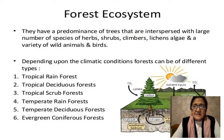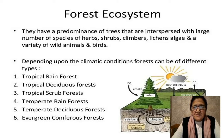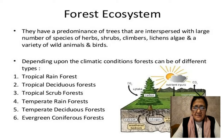Forest ecosystem. They have a predominance of trees that are interspersed with a large number of species of herbs, shrubs, climbers, lianas, algae, and a variety of wild animals and birds.